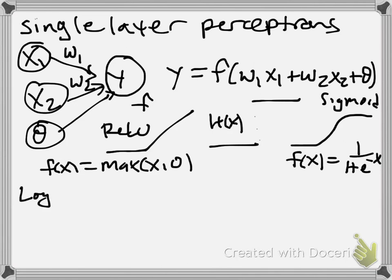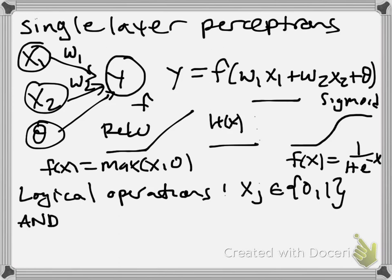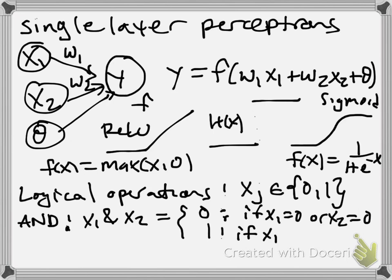One of these is logical operations. In our example, we're going to take all of our xj's to be either 0 or 1, false or true. And a couple of logical operations that you certainly use all the time, even in daily speech, but maybe you've never thought about as functions before, are the AND operations, where essentially the output of an AND is 0 if x1 equals 0 or x2 equals 0, and it's 1 if both x1 and x2 are equal to 1.